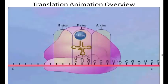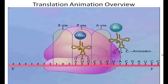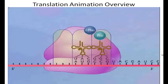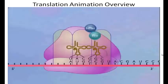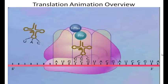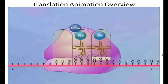The initiating transfer RNA carrying formyl methionine binds to the P-site. A transfer RNA that recognizes the next codon and carries the second amino acid then moves into the A-site. The formyl methionine carried by the transfer RNA in the P-site is then joined to the amino acid carried by the transfer RNA that just entered the A-site by a peptide bond.